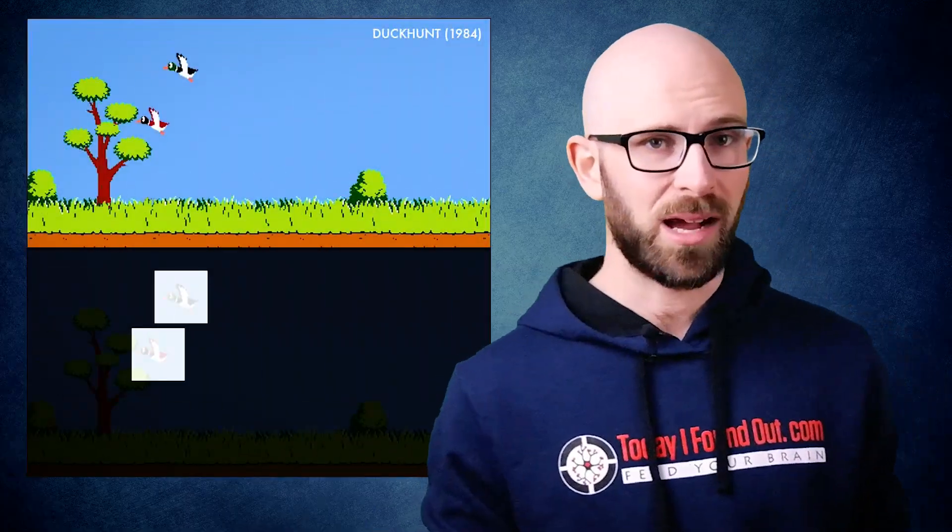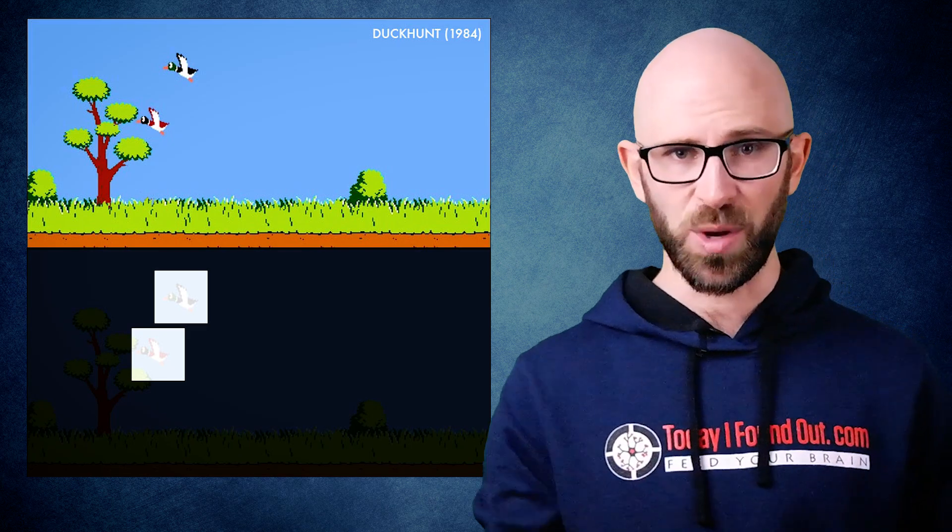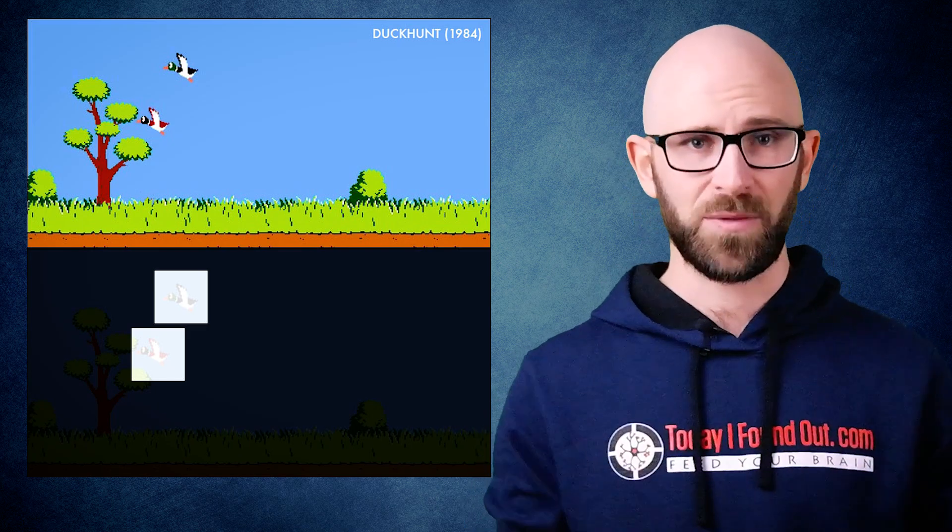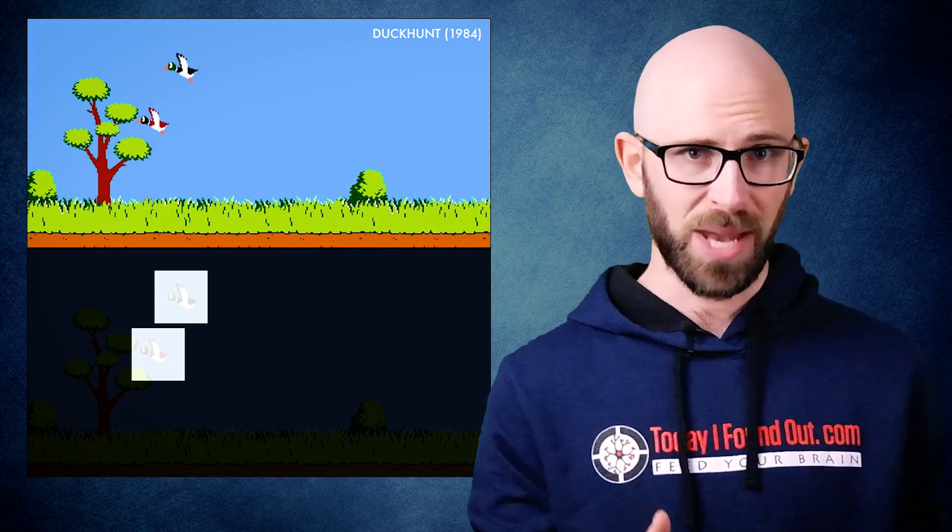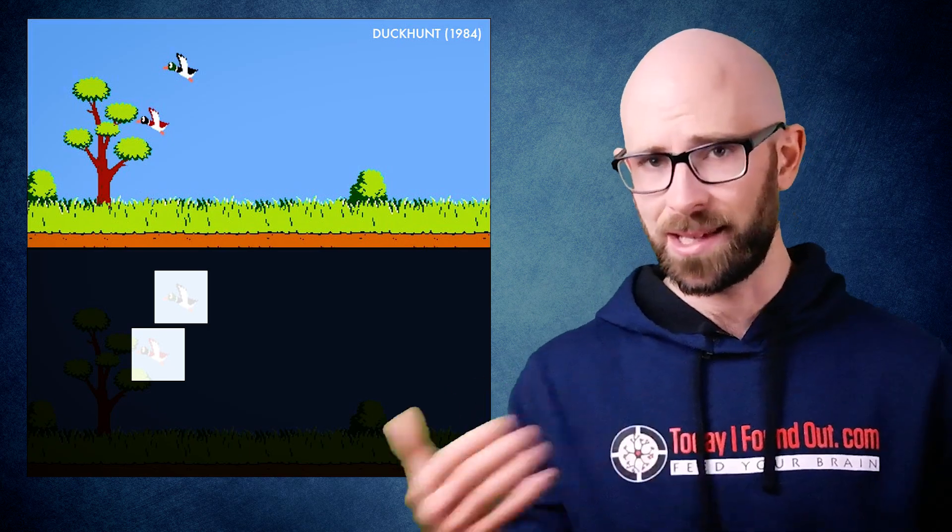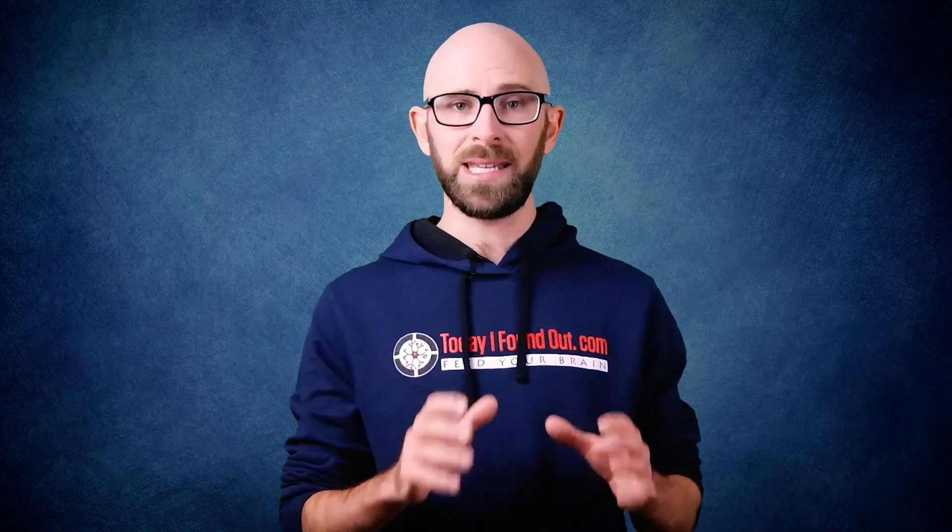For games with multiple targets at any given time, the same type of method is used, except multiple target frames are shown. So the game will flash the black reference screen, then will flash one of the targets, leaving the rest of the screen black. The game knows which target is hit, if any, by which frame is currently being shown when a light shift is detected.